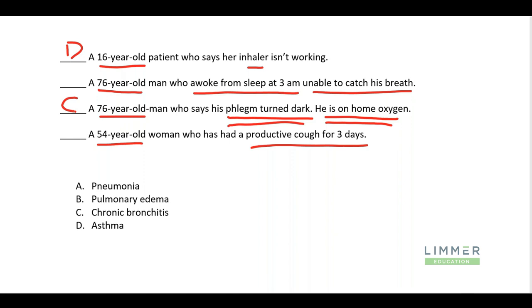Now I've got two left: pulmonary edema and pneumonia. A 76-year-old man who awoke from sleep at 3 a.m., unable to catch his breath. And a 54-year-old woman with a productive cough for three days. Which one comes on suddenly and which comes on gradually? The productive cough for three days says pneumonia. And pulmonary edema is the 76-year-old who awoke at 3 a.m. — that's a classic presentation. You fall asleep without your pillows, you've got fluid in your lungs, you wake up and can't breathe. You find them with feet dangling off the bed in the tripod position at 3 in the morning.